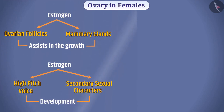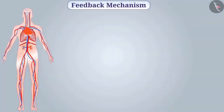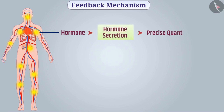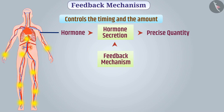All these changes occur at the age of 10 to 12 years and are associated with puberty. In this way, various hormones control the growth, metabolism, and development of the body. Lack or excess of any hormone in the body causes many diseases. Therefore, it is necessary to have hormone secretion in a precise quantity in the body. The feedback mechanism controls the timing and the amount of hormone secretion. In the feedback mechanism, a substance present in the body regulates the secretion of the hormone, so that the hormone is secreted as per requirement.